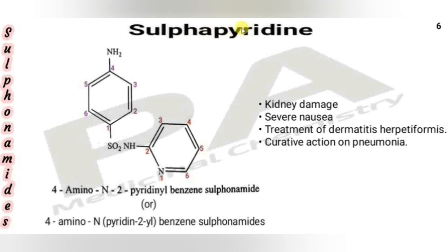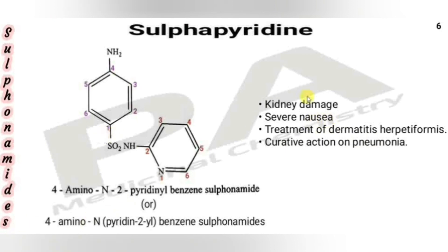The next drug is sulfapyridine. From the name itself we can say it has a pyridine nucleus connected to the sulfanilamide moiety. The second position of pyridine is connected to NH, giving the chemical name 4-amino-N-(pyridin-2-yl)benzenesulfonamide. It causes kidney damage and severe nausea in most patients. Due to its high toxicity, it is used only for dermatitis herpetiformis, though it does have curative action on pneumonia.